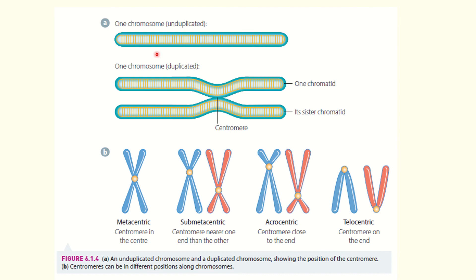Looking here, we can see that process. We have one unduplicated chromosome, and then one duplicated chromosome with the two sister chromatids — the original and then the duplicate. This also shows how they can be connected with the centromeres. You do not need to know all the different centromere positionings.